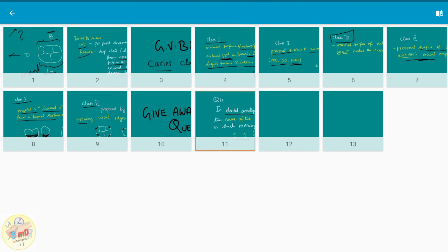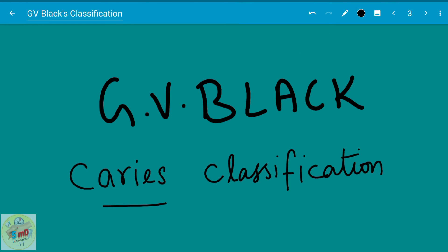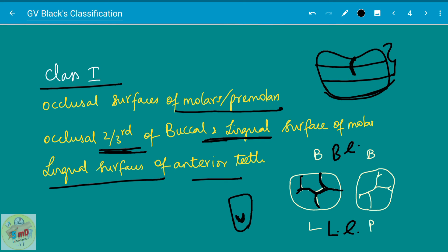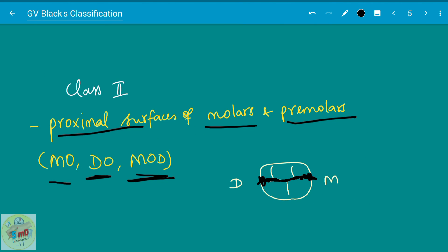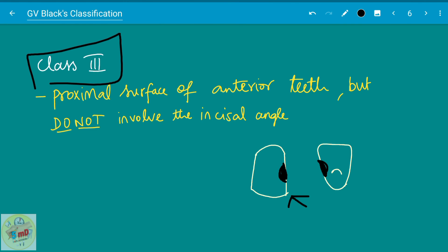See you soon in the next video with the next question, but before ending this video let us revise GV Black's classification once again. Class one is occlusal surfaces of the molar and premolar and lingual surfaces of the anterior teeth. When involving buccal and lingual surface it should not extend beyond the occlusal two-thirds. If it involves the buccal aspect it is buccal extension. If it involves the lingual aspect it is lingual extension. In class two we have proximal surfaces of the molars and premolars. Depending on mesial or distal, it is called as mesio-occlusal, disto-occlusal, or mesio-occlusal-distal.